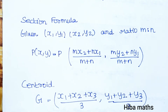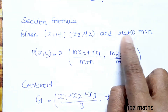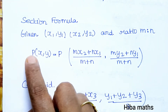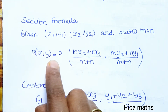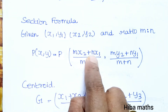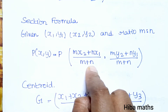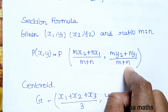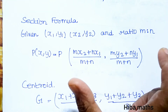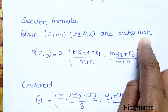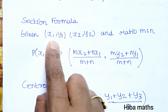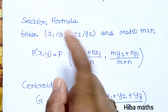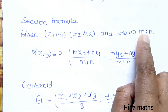This is the section formula. If a point P divides a line in the ratio m to n, then P(x, y) equals: x = (m·x2 plus n·x1) divided by (m plus n), and y = (m·y2 plus n·y1) divided by (m plus n).